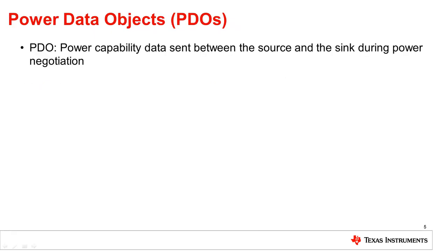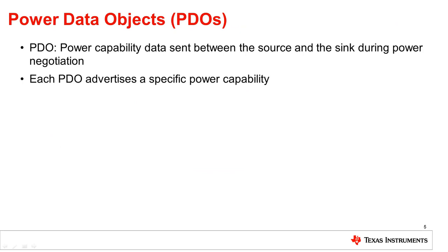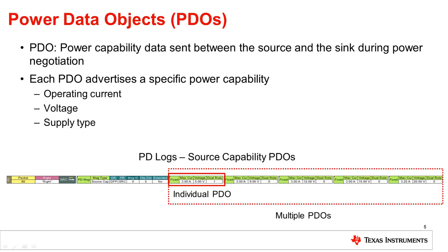Outside of the power paths, the GUI also enables you to edit the PDOs sent by the device. A PDO is a power data object, which is power capability data sent between the source and the sink during power negotiation. A PDO contains a current, voltage, and supply type. This image shows an example of a PDO sent by a source advertising what power capabilities the source has.